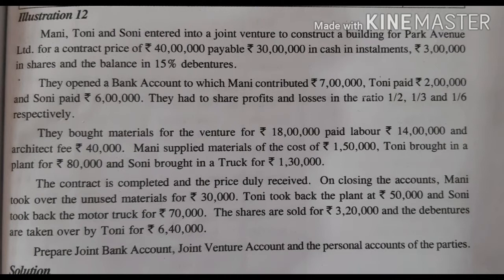Today's question: Money paid Rs. 2 lakhs and Sony paid Rs. 6 lakhs. They had to share profits and losses in the ratio of 1/2, 1/3 and 1/6 respectively. They bought machinery for the venture for Rs. 18 lakhs, paid labour Rs. 14 lakhs and architect's fee Rs. 40,000. Money supplied materials for the cost of Rs. 1,50,000. Tony brought in a plant for Rs. 80,000 and Sony brought in a truck for Rs. 1,30,000. The contract is completed and the price duly received.